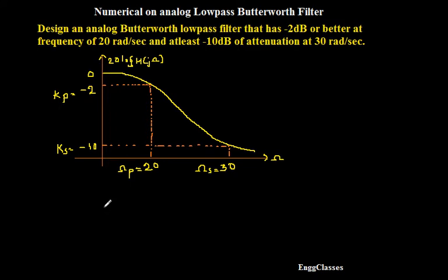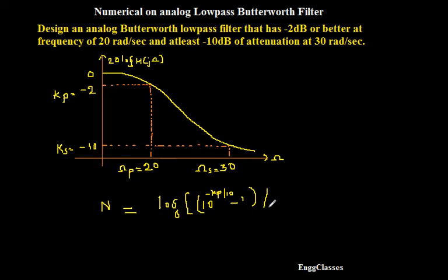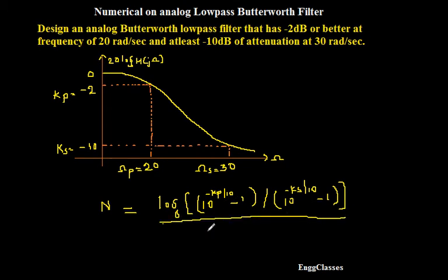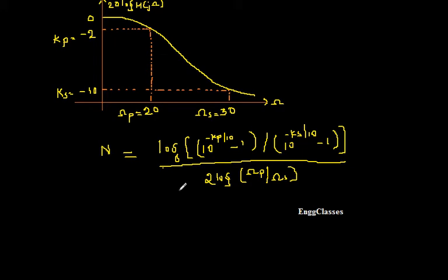What is the first step? The first step says: find the order of the filter. The order of the filter is represented as N, and the formula is: N equals log of (10 to the power of minus Kp divided by 10, minus 1) divided by (10 to the power of minus Ks divided by 10, minus 1), all divided by 2 log(ωp / ωs). This is the formula to find the order of the filter.